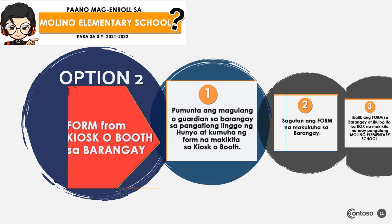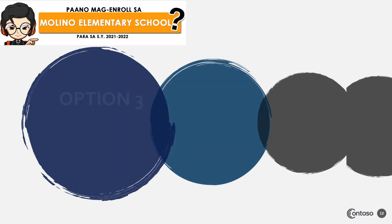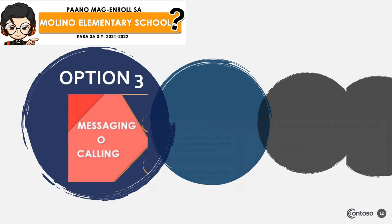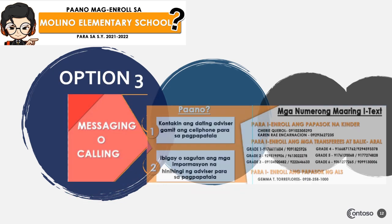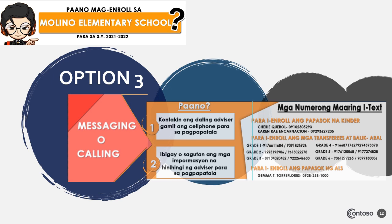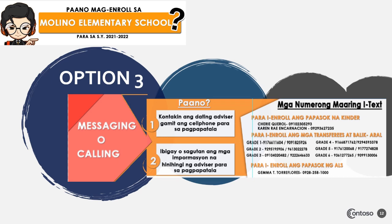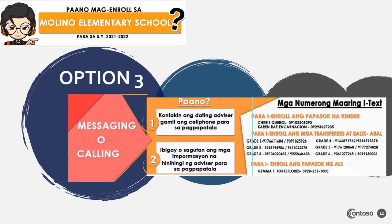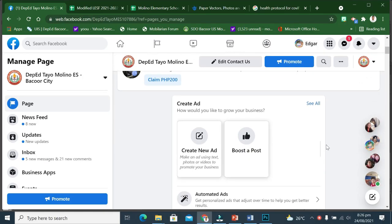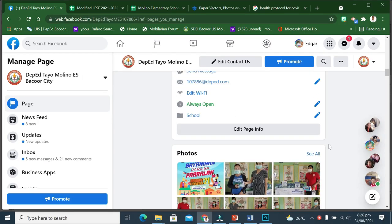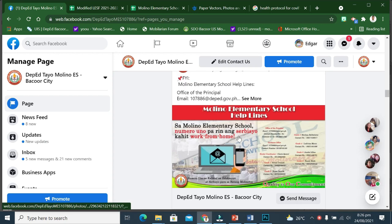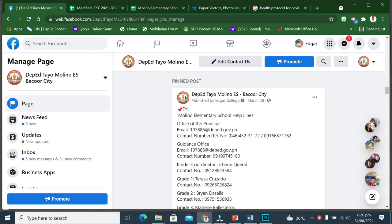Option 3: Messaging o calling. Step 1: Kontaktin ang dating advisor gamit ang cellphone para sa pagpapatala. Step 2: Ibigay o sagutan ang mga impormasyon na hinihingi ng advisor para sa pagpapatala. Step 3: Bisitahin ang ating school page at tingnan ang mga numero na maaaring i-text o tawagan sa page na ito.